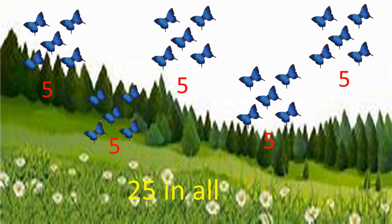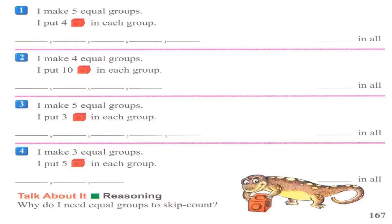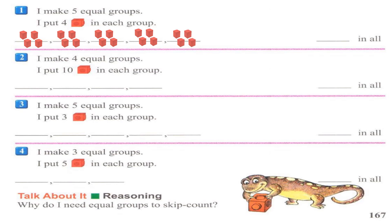Now guys, try to open your math book to page 167. Look at number one — make five equal groups and put four cubes in each group. Look carefully: I put four cubes in the first group, four cubes in the second one, and also in the third, fourth, and fifth groups.